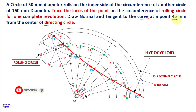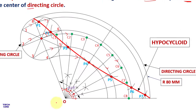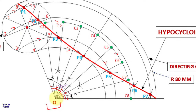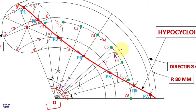To draw the normal and tangent at a point 45 mm from the center of the directing circle: open your compass to 45 mm, place the needle at the center O, and mark an arc cutting the hypocycloid curve. Name this point J. Then put the compass at J, open it to the radius of the rolling circle, and mark an arc cutting the center arc. Name this point K.